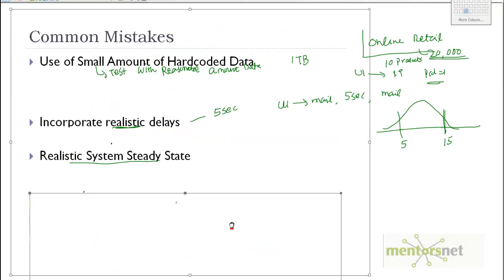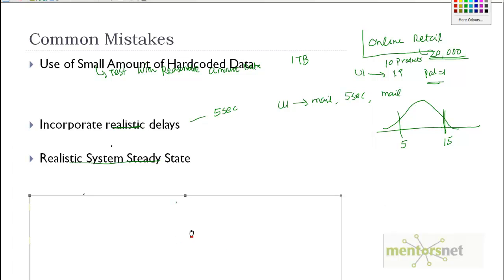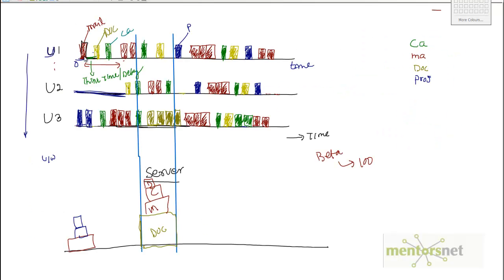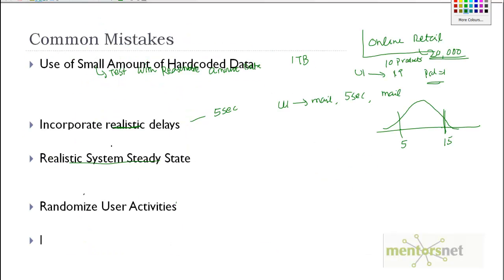Finally, another thing that I've seen a lot of times people do is the randomized user activities. If you see here in our distribution chart, we're doing a lot of mail, document, calendar, and so on. We're not doing one kind of operation all the time - all those hundred users are not sending mail at the same time. That's a lot of times a mistake people make while designing the workload: they try to do everything at the same time. Again, that is not realistic. You need to randomize your user activities.